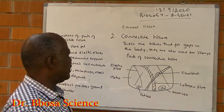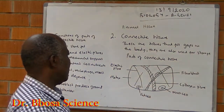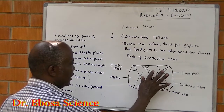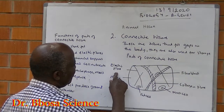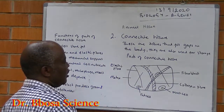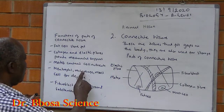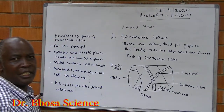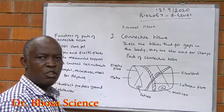We have connective tissues. These are tissues which fill gaps in the body. They are also used for storage. Parts of connective tissue include: fibroblasts — the cells that produce ground substance, collagen fibers, and elastic fibers, providing mechanical structural support. The matrix contains nutrients for the cell. Mast cells, neutrophils, and macrophages are for defense — they defend the body against invading microorganisms. Then the fat cells — they store fats.